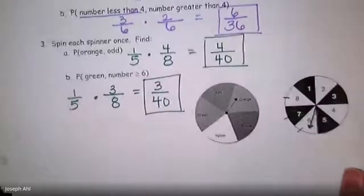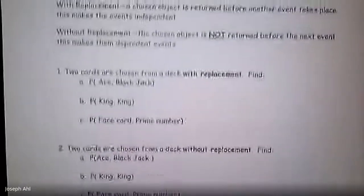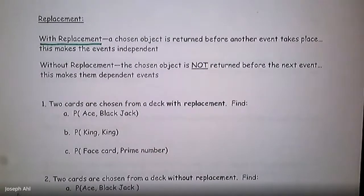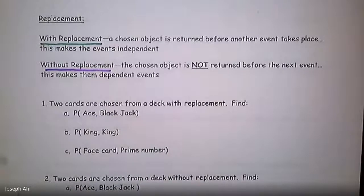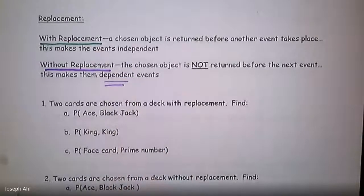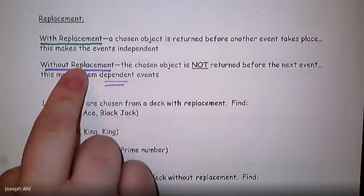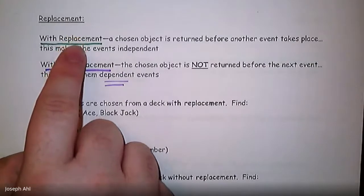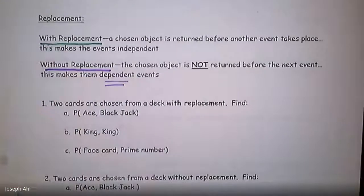The last main idea for today is the concept of replacement. If something is 'with replacement,' when you choose an object — say a card from a deck — you look at it and then return it to the deck before making your next selection. 'Without replacement' means if you pick a card from the deck, you do not return it before the next event happens. Those events are not independent — they become dependent events. If you take a card and don't replace it, the second time you pick a card, you now only have 51 to choose from, not 52.